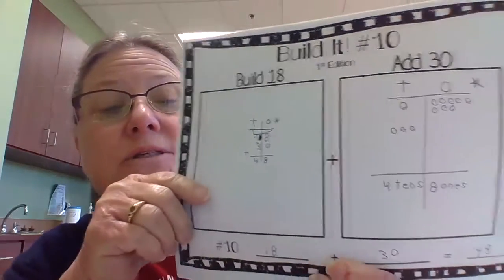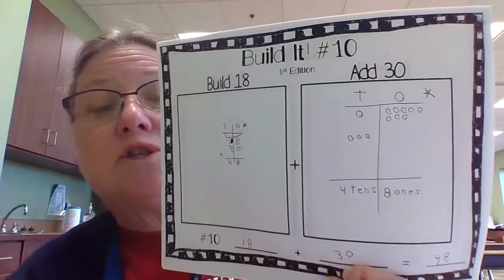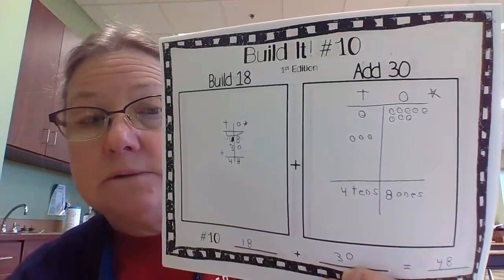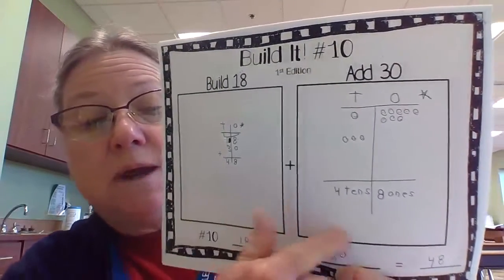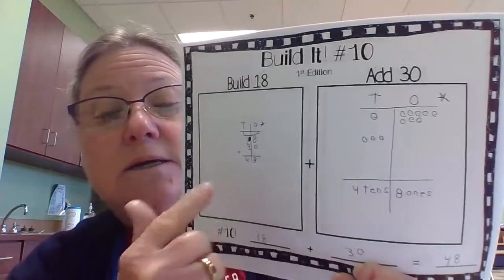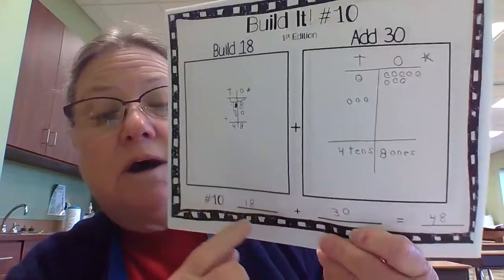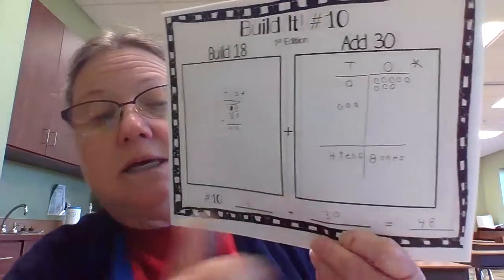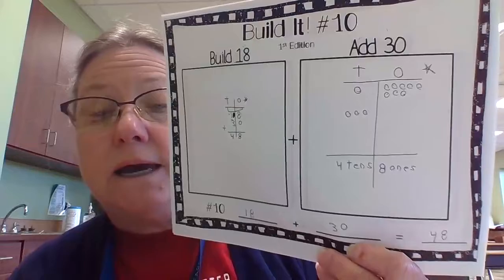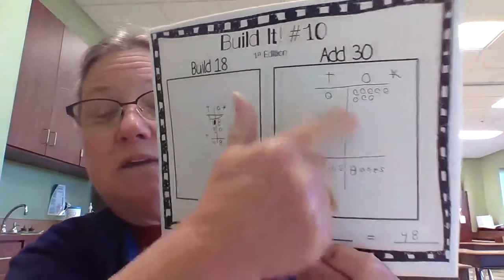Then, in your second box, you draw that bigger t, and you solve it using the chips. Then you go back and make sure that you write down how many tens and how many ones. Go back and write the answer here, and then you also write the problem down here. So you're seeing the problem done three different ways: vertical, horizontal, and with chips.